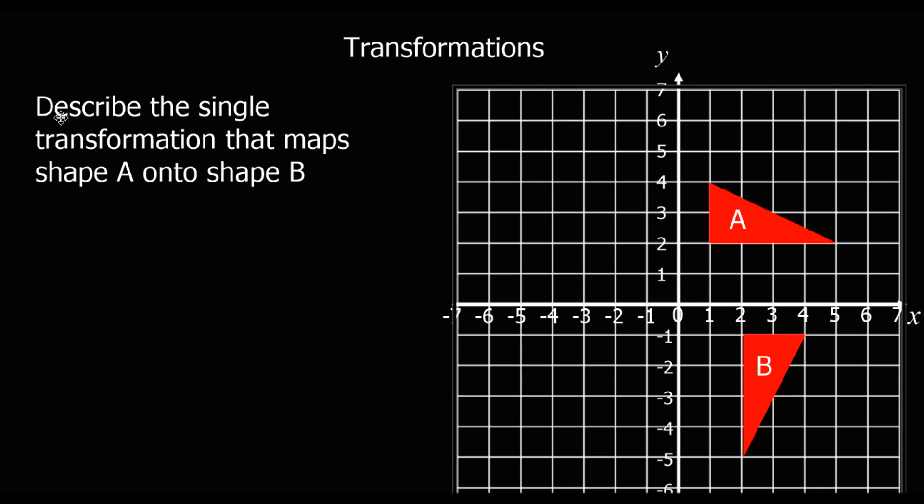Okay, this one says describe the transformation, describe the single transformation that maps shape A onto shape B. So it's saying what's happened to the shape. And in this instance, this would be a 3 mark question, asking for 3 bits of information. So we can see it's been a rotation.